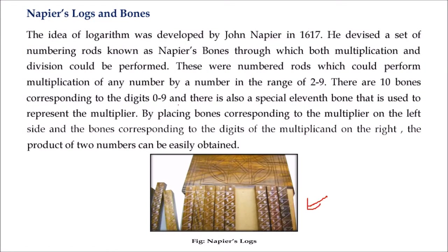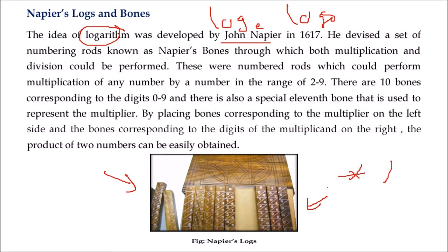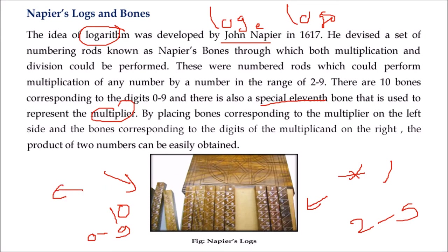Napier's Logs and Bones: the idea of logarithm — log, log e, log 10 — was developed by John Napier. He devised numbered rods, also called Napier's Bones, through which multiplication and division can be performed. These rods can perform multiplication of any number by a number in the range of 2 to 9. There are 10 bones corresponding to digits 0 to 9, and a special 11th bone which is the multiplier. By placing bones corresponding to the multiplier on the left and digits of the multiplicand on the right, the product of two numbers can be easily obtained.